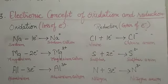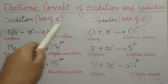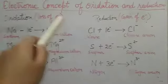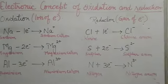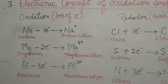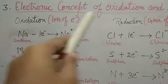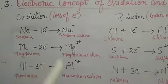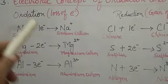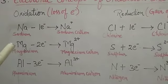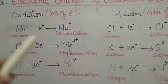Now the electronic concept of oxidation and reduction. Oxidation means loss of electrons and reduction means gain of electrons. According to this electronic concept, take sodium (Na) with atomic number 11. When it loses one electron it becomes 10 electrons — it gains a positive charge and becomes Na⁺ after losing one electron.